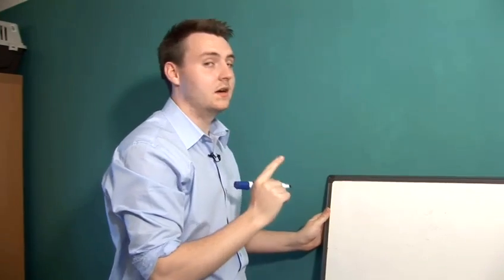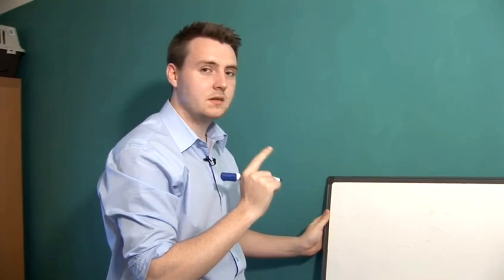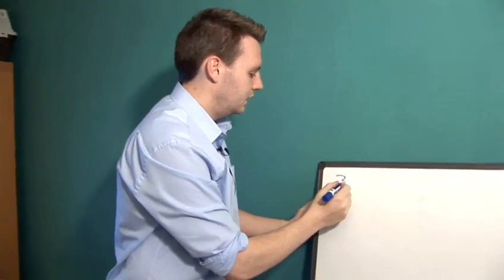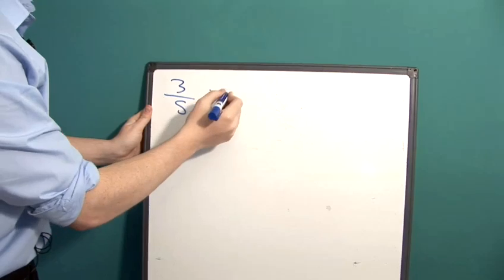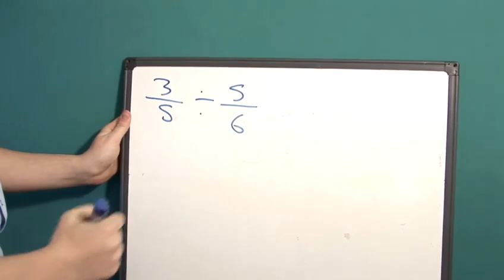If we want to divide two fractions, there is something quite simple and easy we can do. Let's say we want to divide 3 fifths, we want to divide that by 5 sixths.